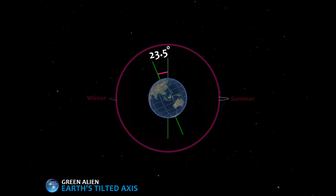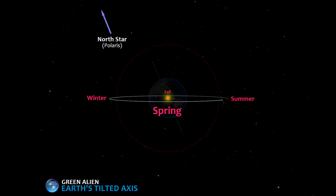And the amazing thing is, it is always tilted in the same direction. The North Pole always points towards the North Star, Polaris. Anyway, let's check out blown-up images of what the Earth looks like at each season so we can understand the tilt of the Earth.